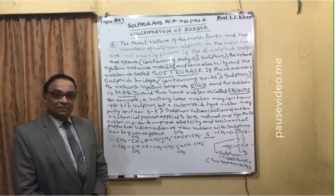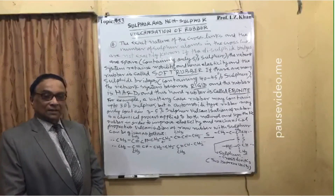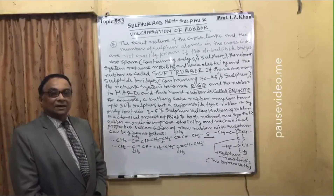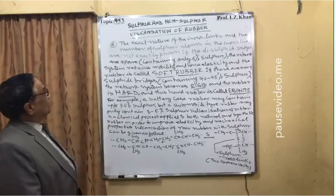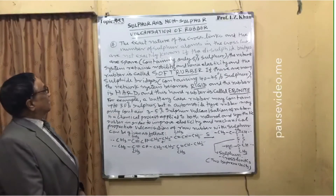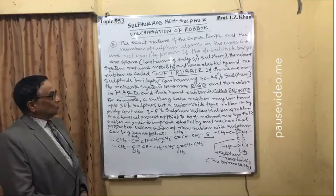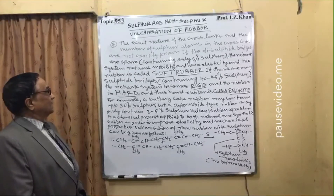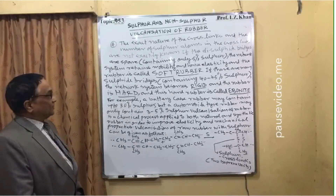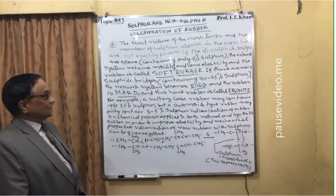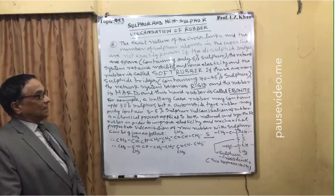When the percentage of sulphur in the vulcanization process goes above 40–45%, the rubber is called hard rubber, and the technical term for it is ebonite. If the disulphide bridges are sparse, containing only about 5% sulphur, the network retains mobility and hence elasticity — this is soft rubber. If there are many sulphide bridges containing 40–45% sulphur, the network becomes very rigid and the rubber is hard; this hard rubber is called ebonite.